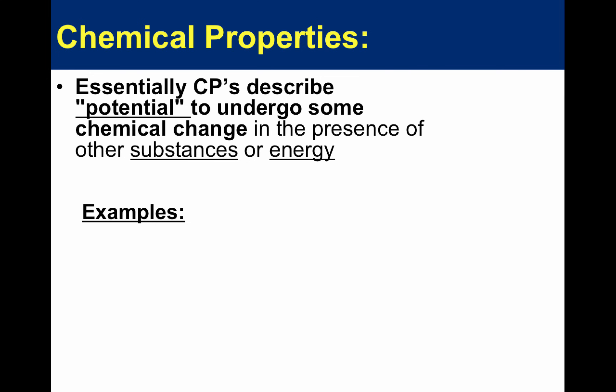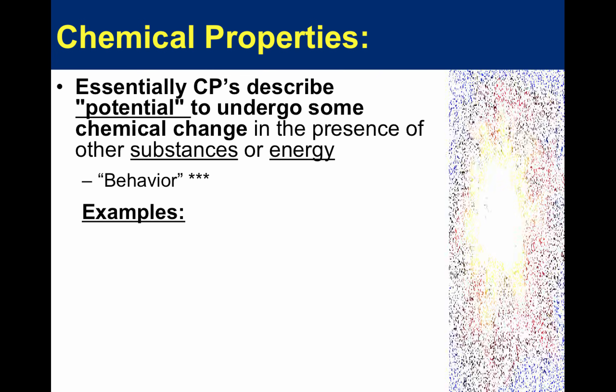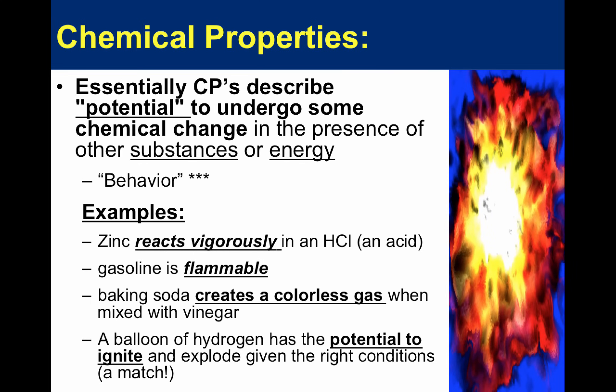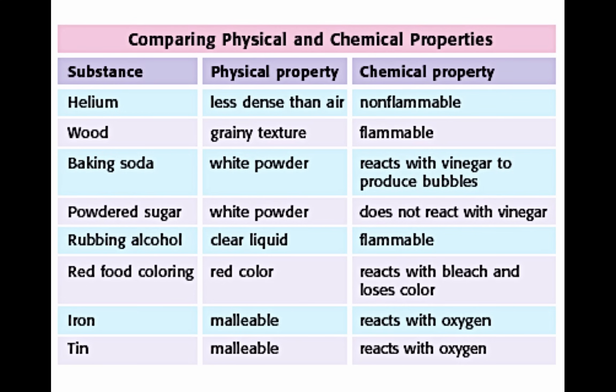In a nutshell, a chemical property will always describe the potential to undergo a chemical change in the presence of another substance or energy. Chemical properties describe the behavior of matter. For instance, zinc will react vigorously in an acid; gasoline is flammable but apple juice is not; baking soda creates a colorless gas when mixed with vinegar; and a balloon of hydrogen has the potential to ignite and explode given the right conditions.